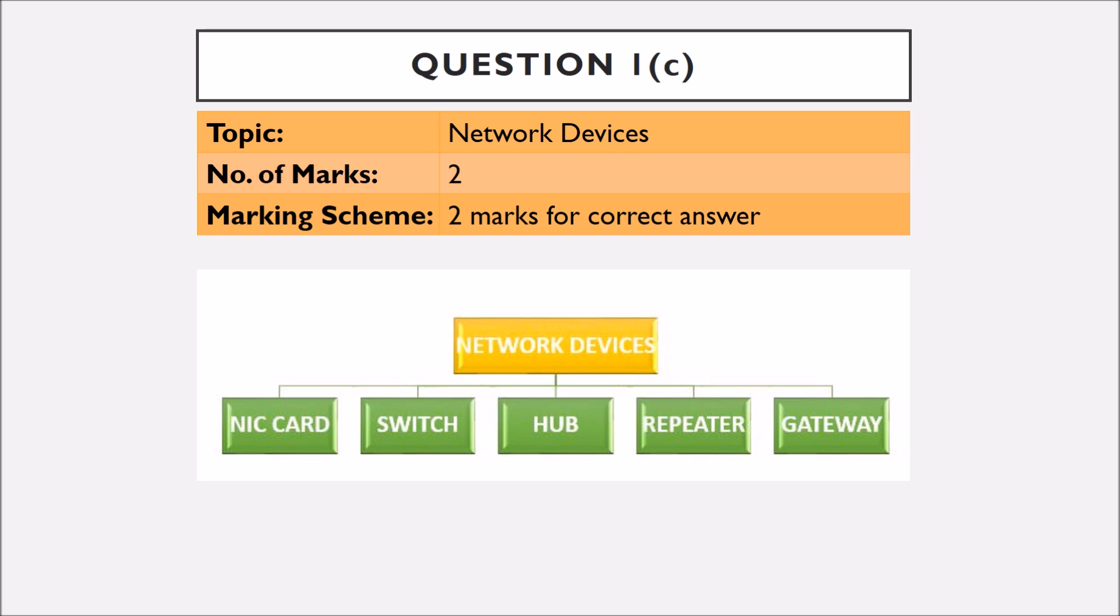Question number one part C is based on different network devices that is NIC card, switch, hub, repeater or gateway. It is again of two marks and suitable marks are awarded according to the answer written.